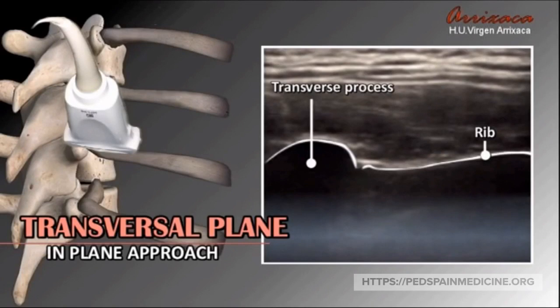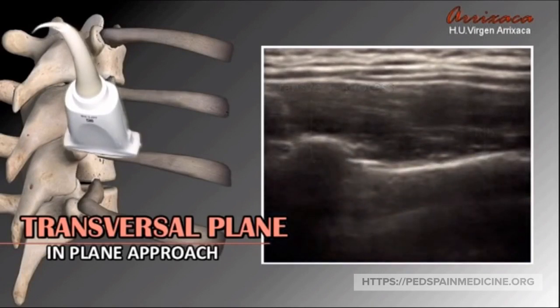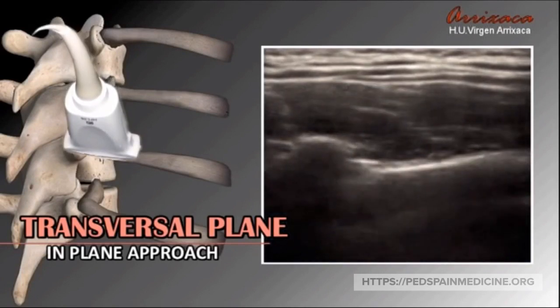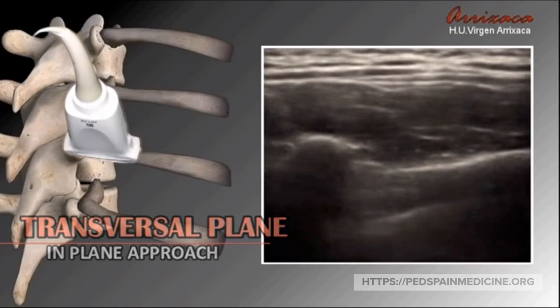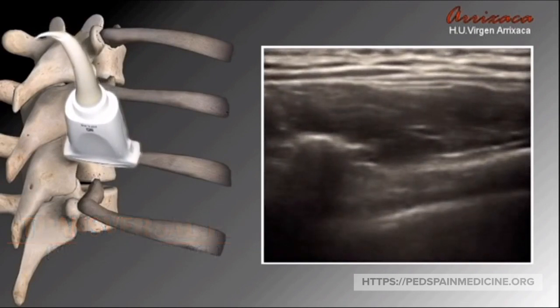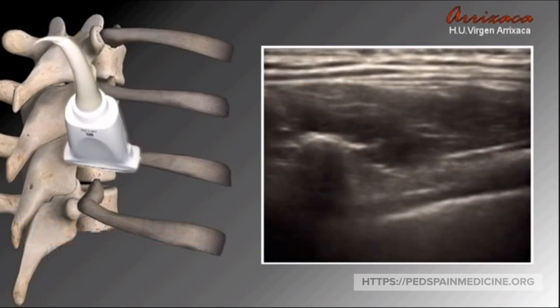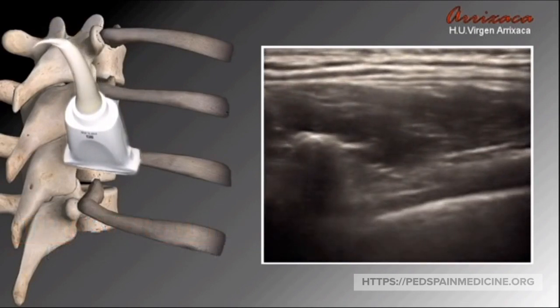The transversal plane approach: using your linear probe, identify your transverse process and rib. Slide your probe downward and find an unobstructed pathway to the paravertebral space.